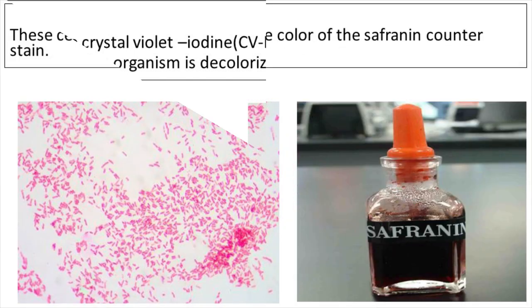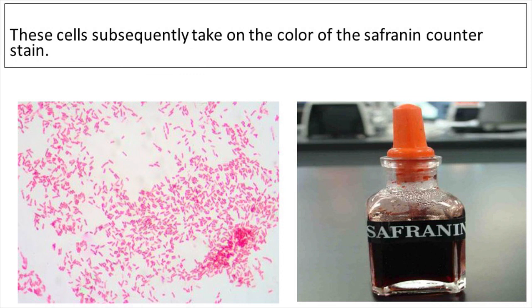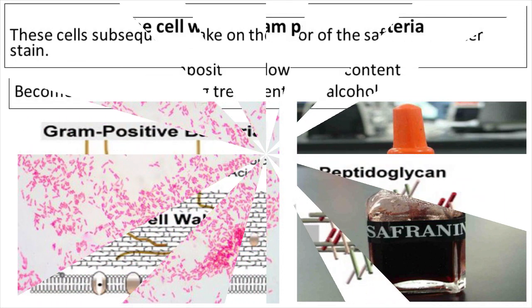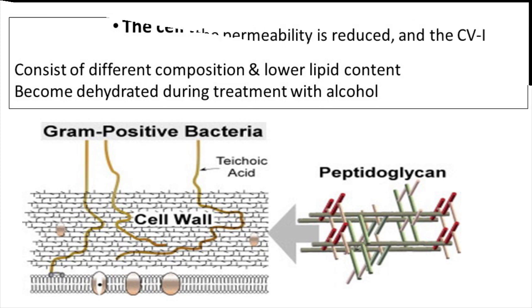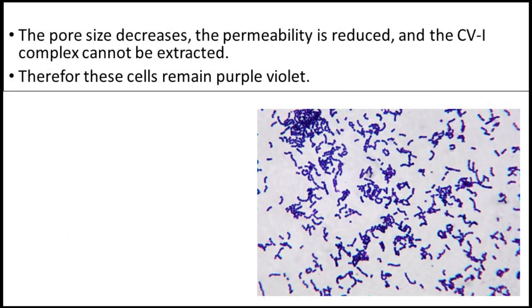These cells subsequently take on the color of the safranin counter stain. The cell walls of Gram positive bacteria consist of different composition and lower lipid content. They easily become dehydrated during treatment with alcohol, the pore size decreases, permeability is reduced, and the crystal violet-iodine complex cannot be extracted. Therefore these cells remain purple-violet.